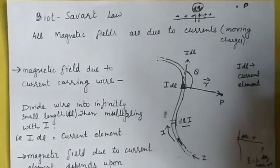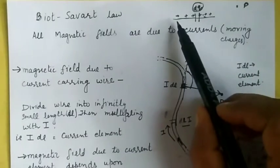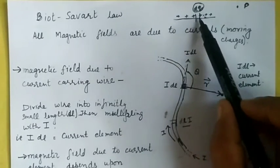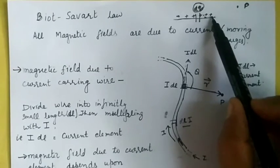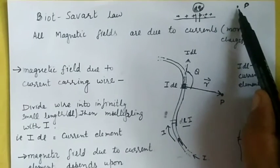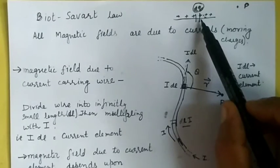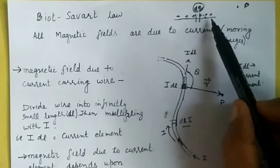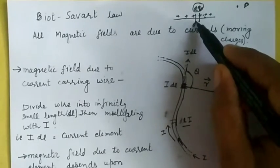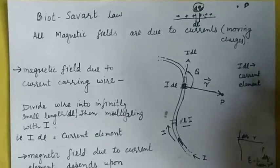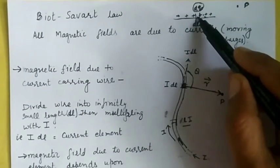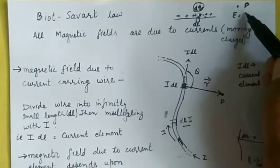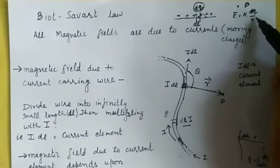First, let us revise the previous topic. Consider a line charge distribution over which positive charge is uniformly distributed. P is a point where we want to calculate the electric field due to this line charge. To calculate the electric field, we divide this infinite line into small lengths dl, each having a charge dq, and calculate the electric field due to each small charge. The electric field is equal to K dq divided by r squared.